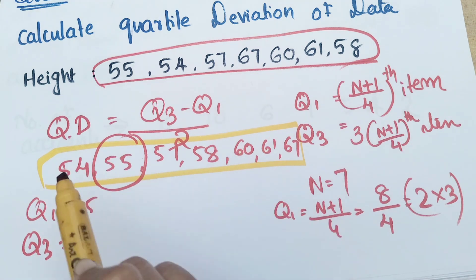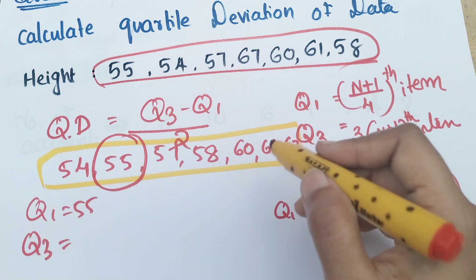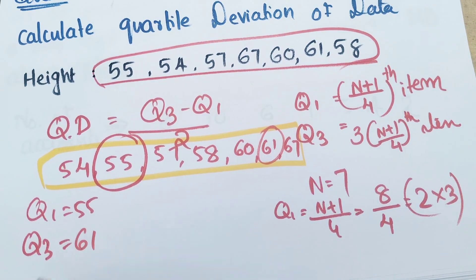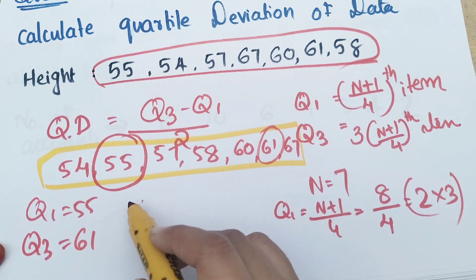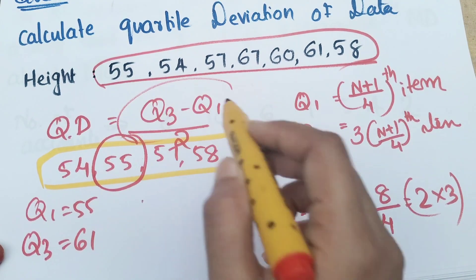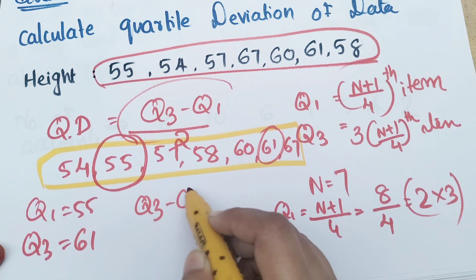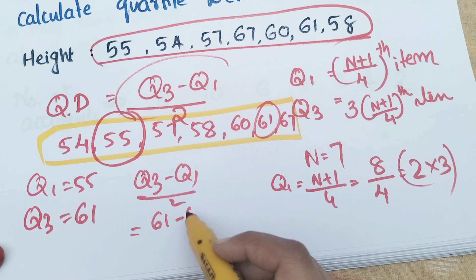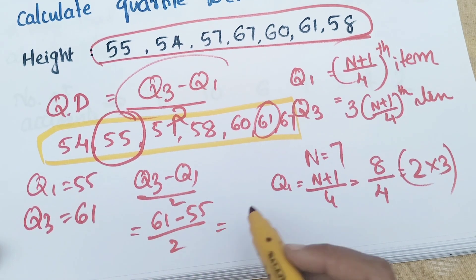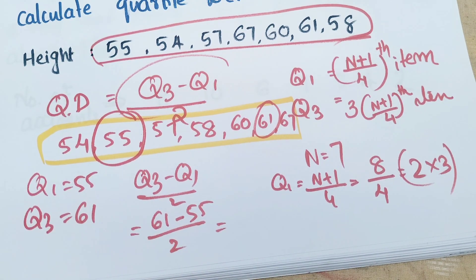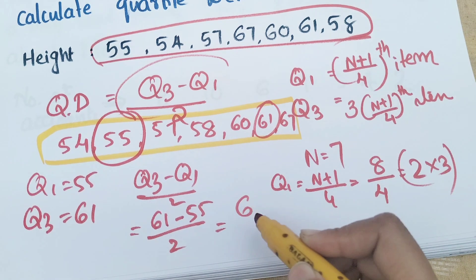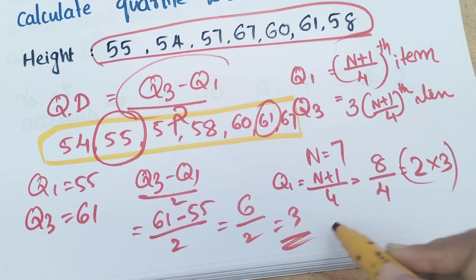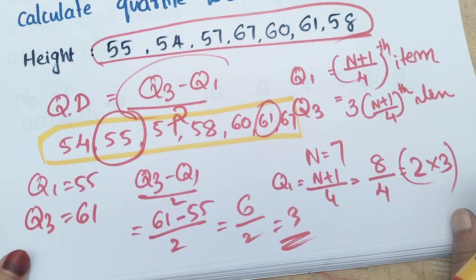Q3 is 61. Q1 is the 2nd item which is 55. Quartile deviation equals Q3 minus Q1 by 2, that is 61 minus 55 by 2. 61 minus 55 equals 6. 6 by 2 equals 3. Quartile deviation equals 3. This is the 2-mark answer.